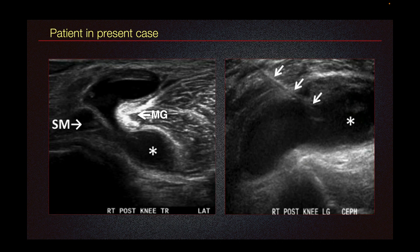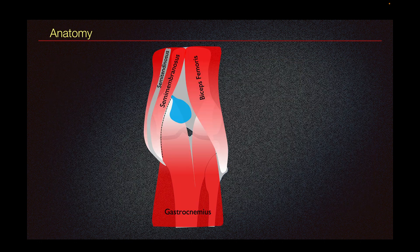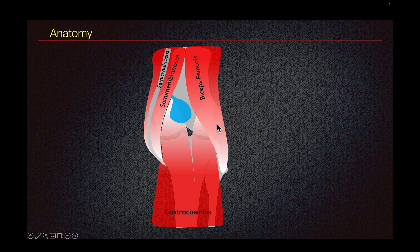Before we look at the ultrasound images, let's look at the anatomy of the posterior knee and Baker's cyst. Here we have the distal femur, proximal tibia, and fibula. Medially, we have the semimembranosus muscle and semitendinosus tendon on top, the medial and lateral head of gastrocnemius, and biceps femoris. There are multiple types of cysts and masses that can occur in the posterior knee, and for a cyst to be a Baker's cyst, it has to originate between the semimembranosus and the medial head of gastrocnemius muscle.